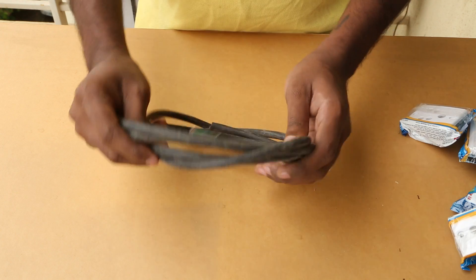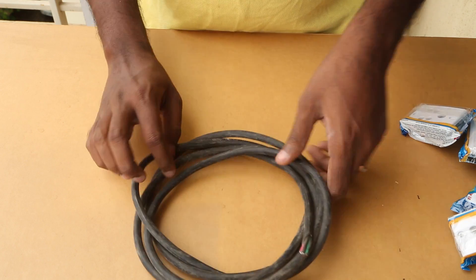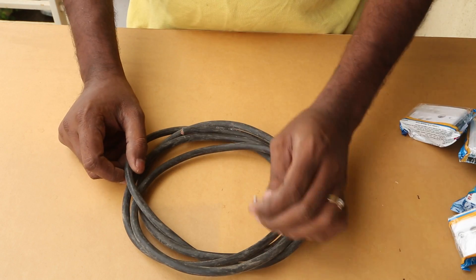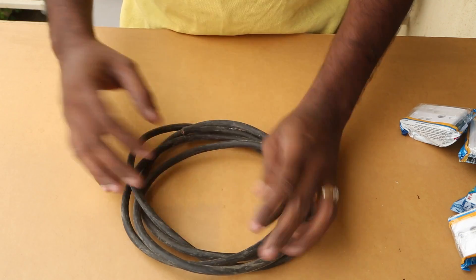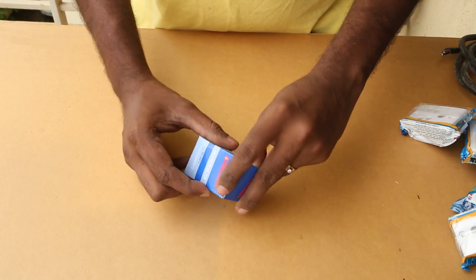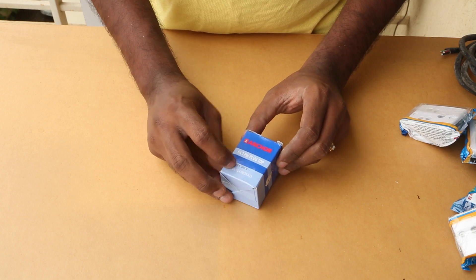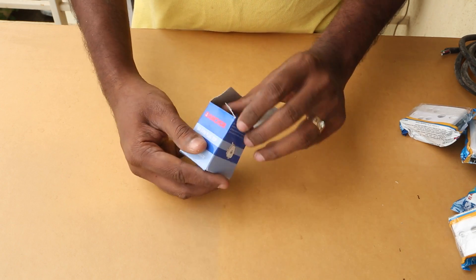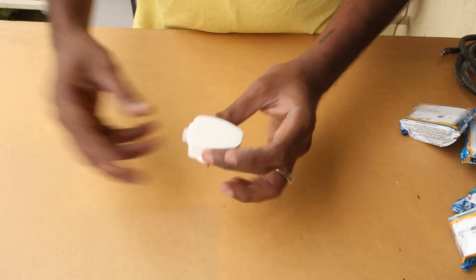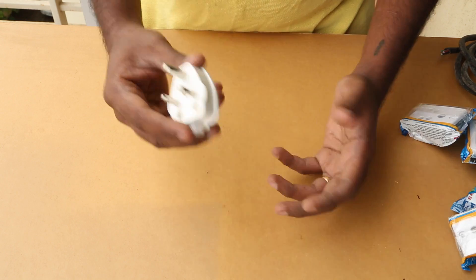Three core 2.5 ampere cable. This will be connected to the extension board and at the end I will connect 6 ampere plug. And finally here's the plug. It's rated for 6 amperes 240 volts and it's a three pin plug. Let's go ahead and see how to put this together.